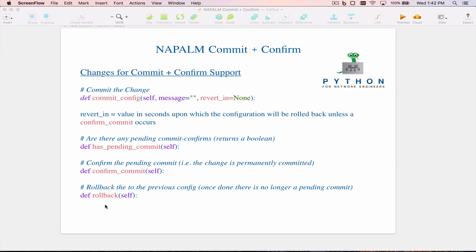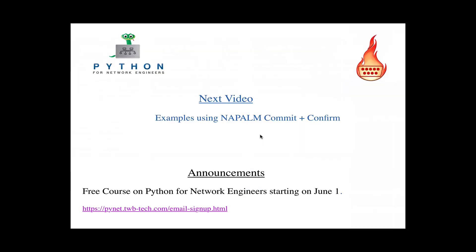In the next video I'll cover examples using NAPALM's commit plus confirm feature: using revert_in when doing a commit, how to confirm that commit, how to roll back that commit by discarding the pending commit confirm, and the behavior when we simply let the commit confirm timer expire.